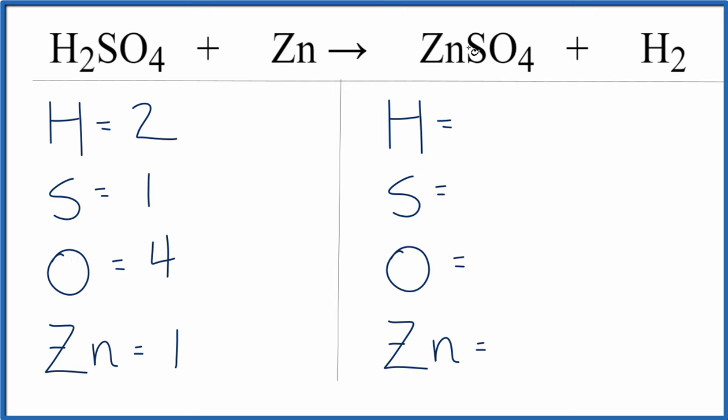On the product side of the equation we have two hydrogens, one sulfur, four oxygens, and one zinc. If you look at the coefficients, you'll notice that they're the same. That means that this equation is balanced.